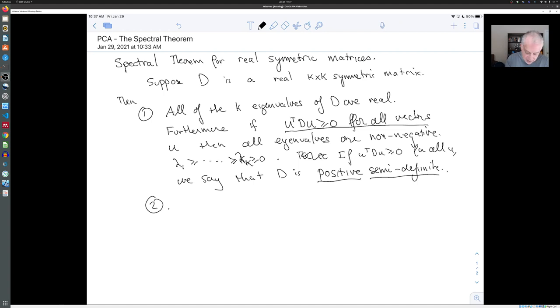The next thing is that if u and v are eigenvectors for D with different eigenvalues, then u and v are orthogonal.